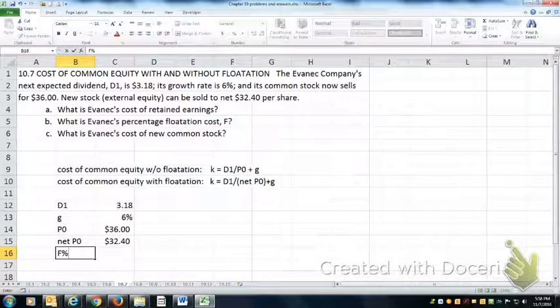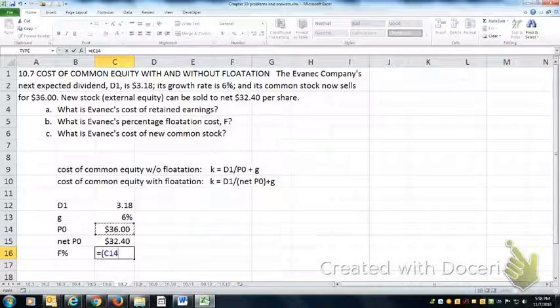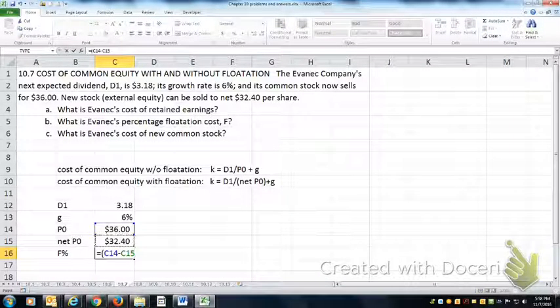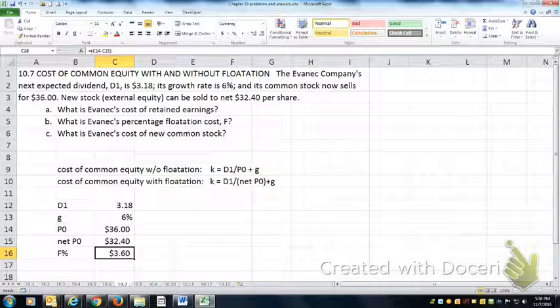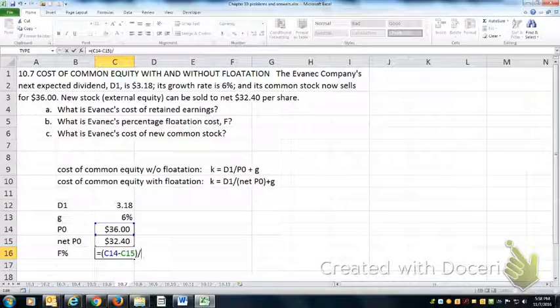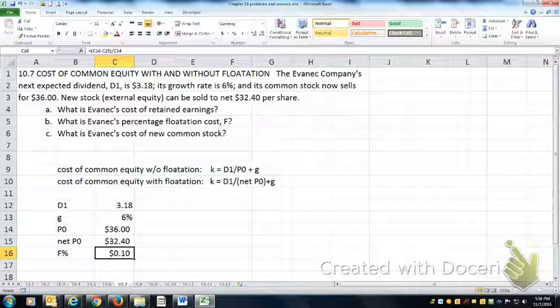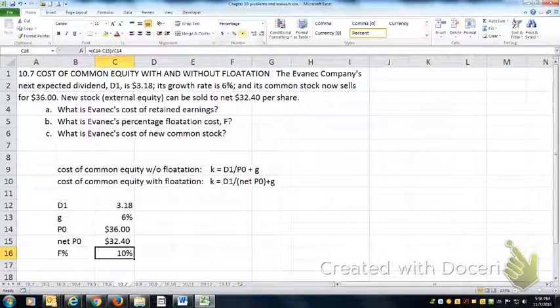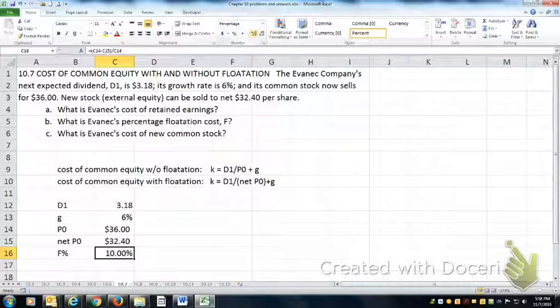By the way, if I wanted to get my F percentage, $36 minus $32.40 means you're going to pay $3.60 commission on every share you sell. So if I divide that by P0, that tells me the commission I'd have to pay to the broker would be about 10% per share.